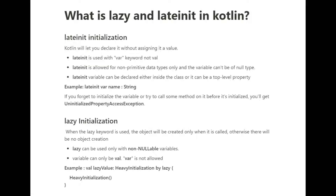The next question is: what is lazy and lateinit in Kotlin? Lateinit and lazy are important initialization properties. It is necessary to know when to use lateinit and when to use lazy initialization. With lateinit, there are times when a variable's value is not available at the site of its declaration. You are telling the compiler: I don't have a value to give you right now, but I'll provide a value later. We need to use the var keyword with lateinit. Lateinit is allowed only with non-nullable data types. It does not work with primitive data types and can be used when the variable property does not have any getter and setter. If you forget to initialize the variable or try to call some method on it before its initialization, you will get an exception known as UninitializedPropertyAccessException.